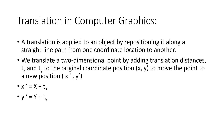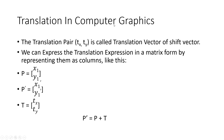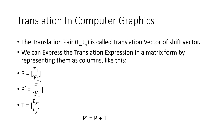We can also represent this translation in computer graphics in terms of a matrix by representing them as columns. This pair tx comma ty is also known as translation vector or shift vector. We represent the original position as a column (x1, y1), and the new position (x1 dash, y1 dash) is obtained by adding the translation vector (tx, ty). So p dash, the new position, equals the original position p plus the translation vector tx and ty.